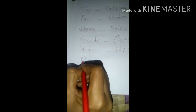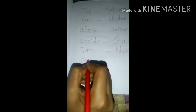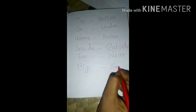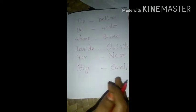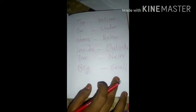Then 'big' — B-I-G — means peria (large). 'Small' — S-M-A-L-L — means siriya (small). These are the keywords used in comparisons.